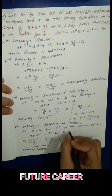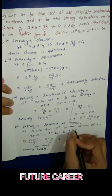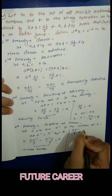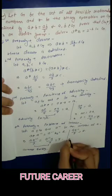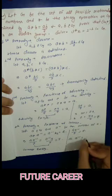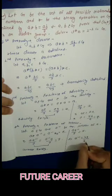To find the inverse: a·a⁻¹/7 = 7, so a·a⁻¹ = 49, therefore a⁻¹ = 49/a.